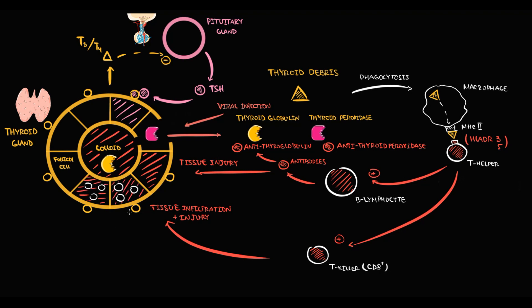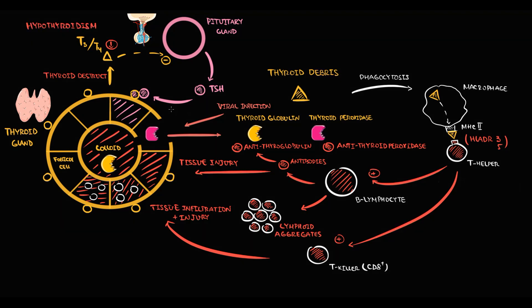Over time, constant stimulation of B-lymphocytes can cause their over-proliferation, and over-proliferation of B-lymphocytes inside the thyroid gland causes formation of lymphoid aggregates. With destruction of thyroid cells, production of thyroid hormones decreases, and the level of thyroid hormones in the blood decreases — a state called hypothyroidism. In response, the pituitary gland begins to produce more TSH to try to stimulate the thyroid gland to produce more hormones.